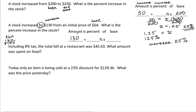$130 increase is what percent of a $64 base price? $130 is x times 64. Then we would divide. 2.03125. That's a decimal.